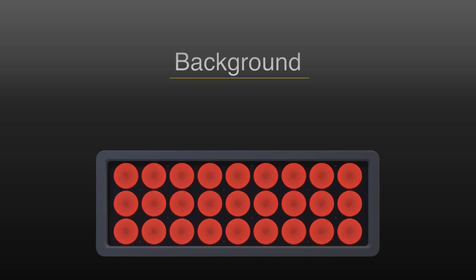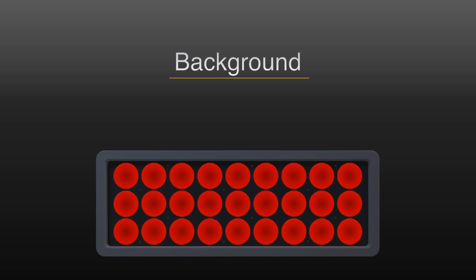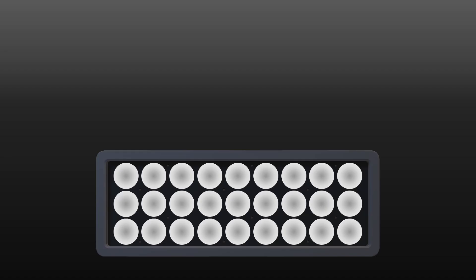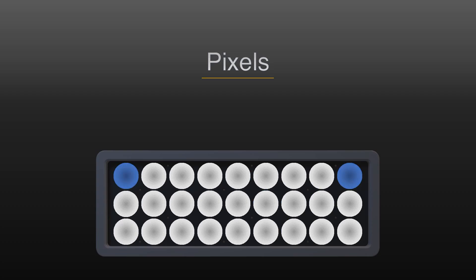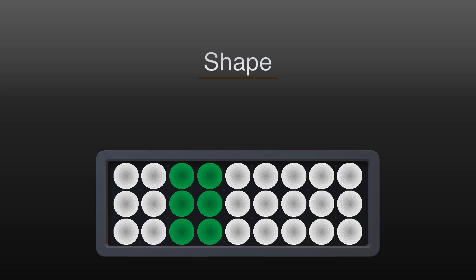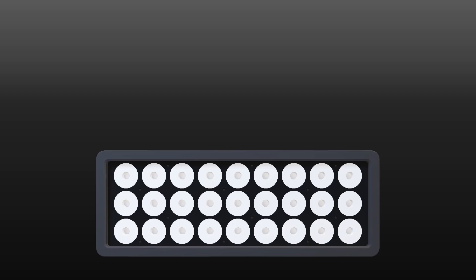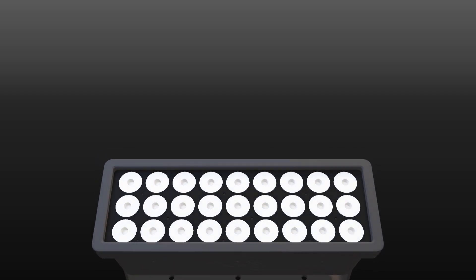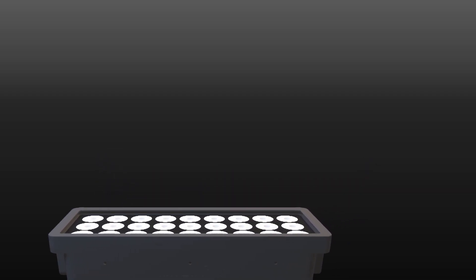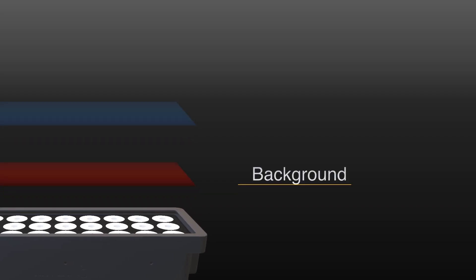The lowest layer is dedicated to the background color, allowing RGBW mixing. The middle layer is the level that enables pixel-to-pixel management. The highest layer is dedicated to the pre-programmed shapes within the fixture. Starting from the lowest priority level, the priority sequence is as follows: background layer, pixel layer, shape layer.